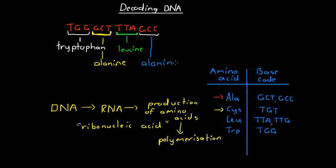These four amino acids will then undergo a condensation reaction, producing a polymer with tryptophan bonded to alanine, bonded to leucine, bonded to alanine, and so on as our DNA code extends in either direction. This is just one small segment of one DNA molecule. Each set of three nucleotides signifies that the production of a specific amino acid is required, and RNA decodes that, communicates it to the amino acid production site, and allows the correct amino acids to be produced. That is how DNA actually functions and is applied within our body.